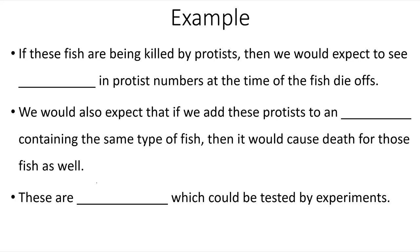Then they needed to make some predictions. If these fish are being killed off by protists, then we would expect to see increases in protist numbers at the time of the fish die-off. That's something that they could test and see. We would also expect that if we add these protists to an aquarium containing the same type of fish, then it would cause the death of those fish as well. Another test that they could perform. These are the predictions which could be tested by experiments. This is how the scientific method works.